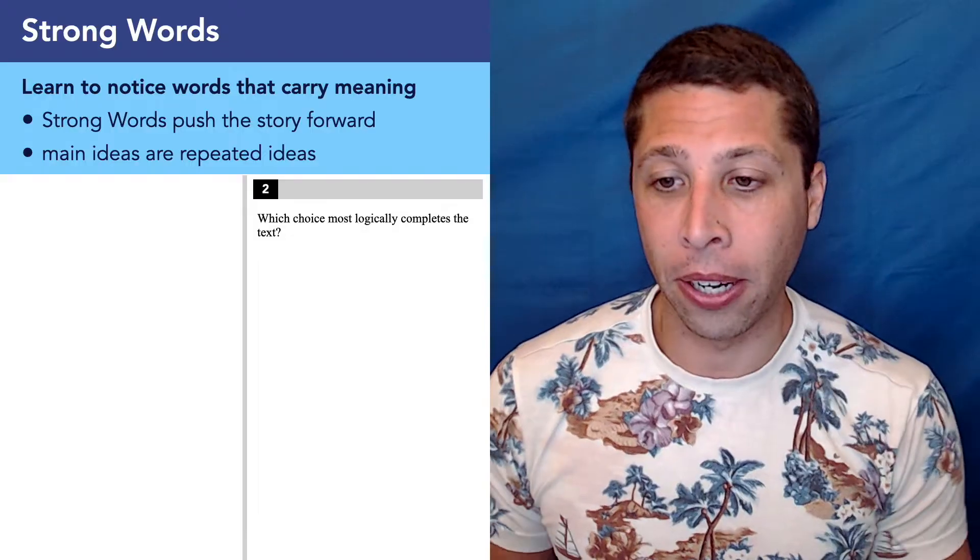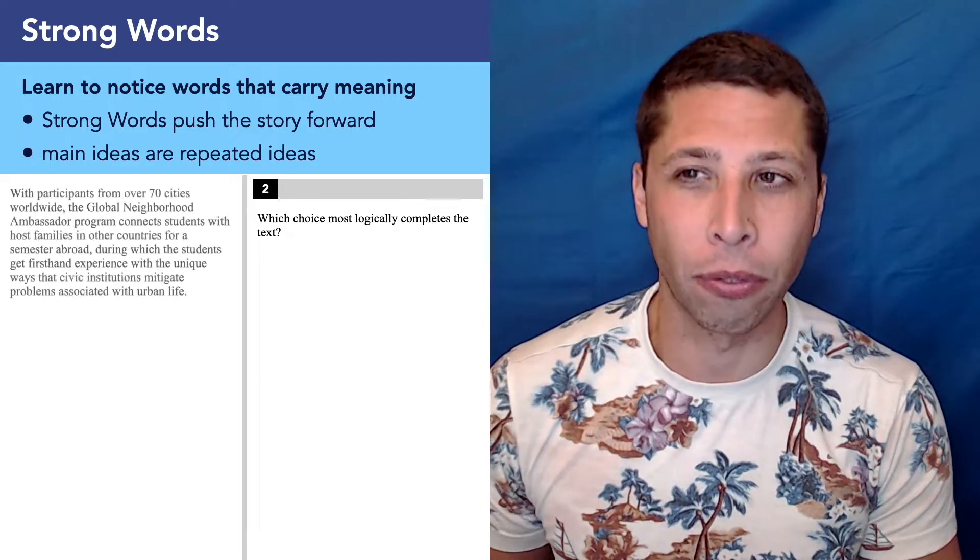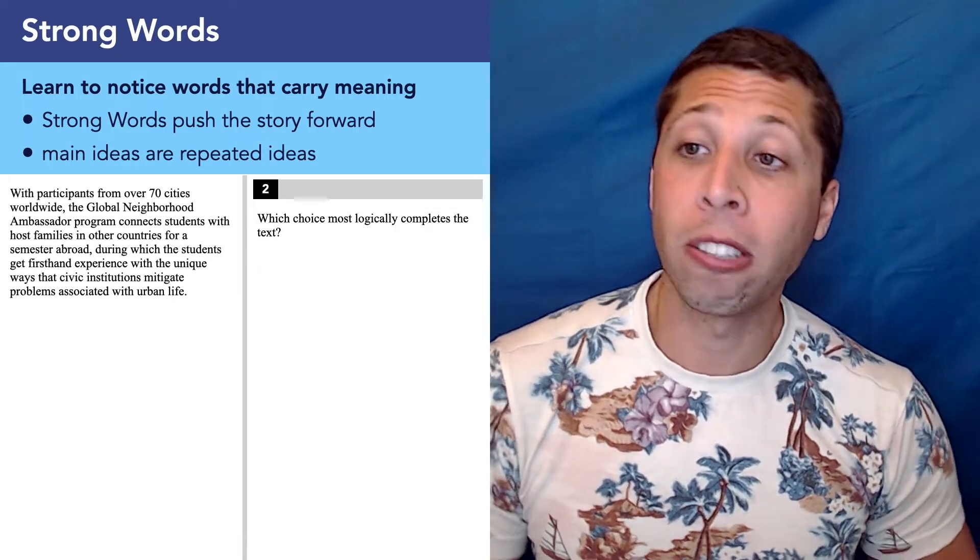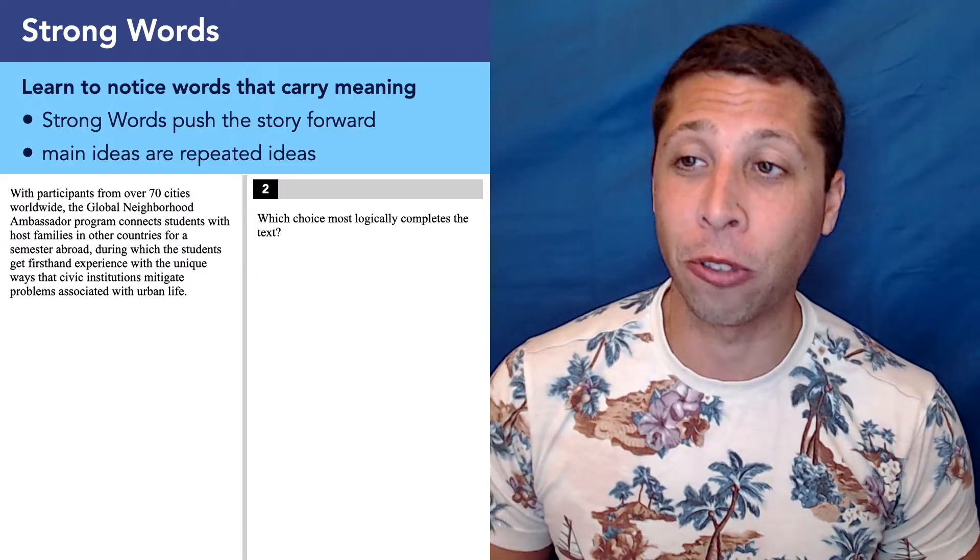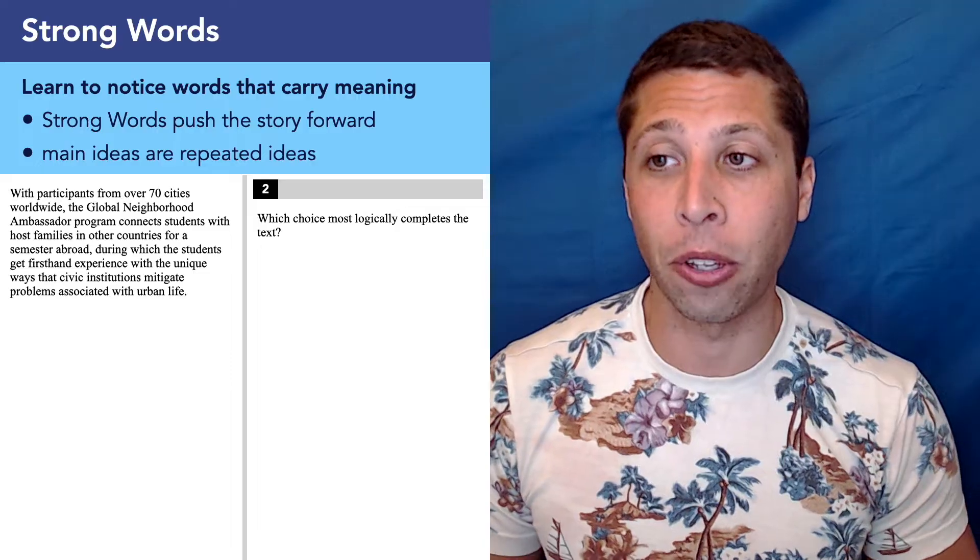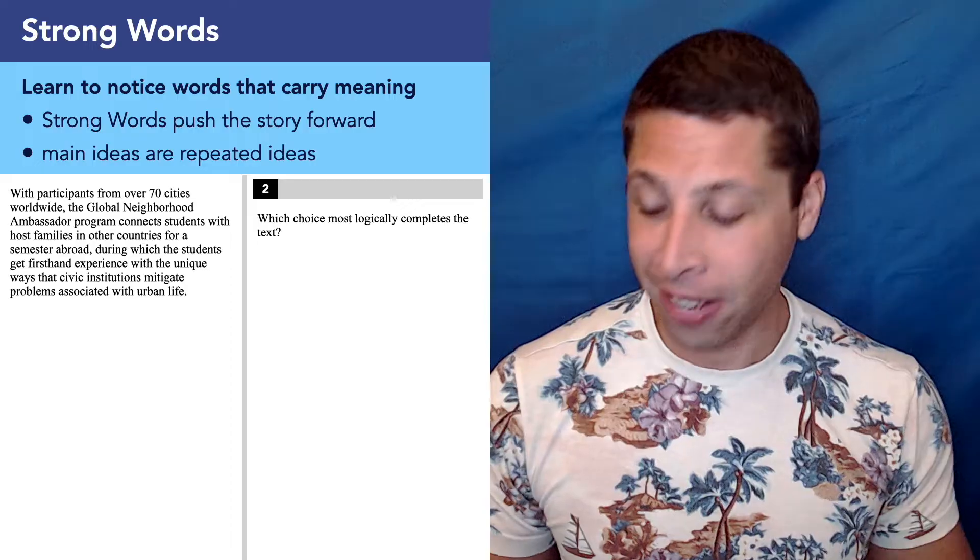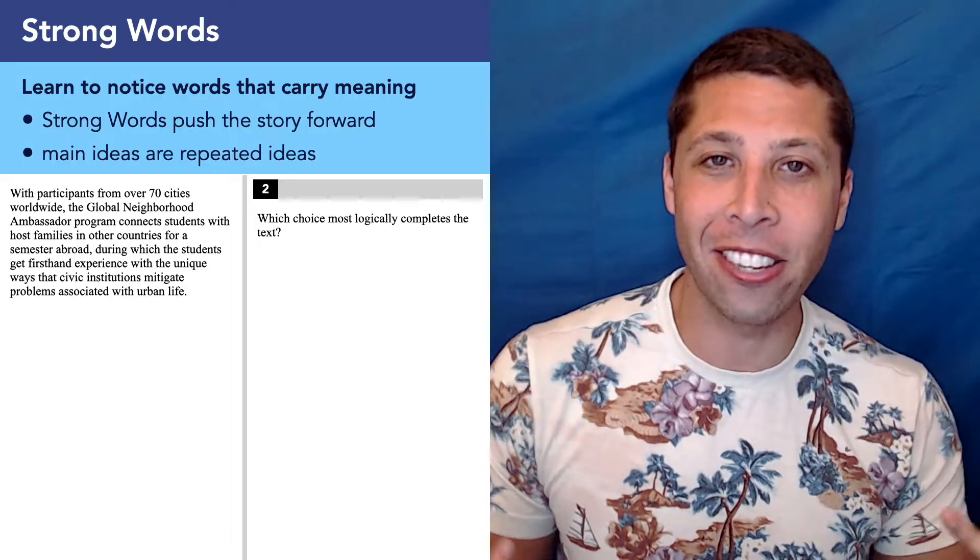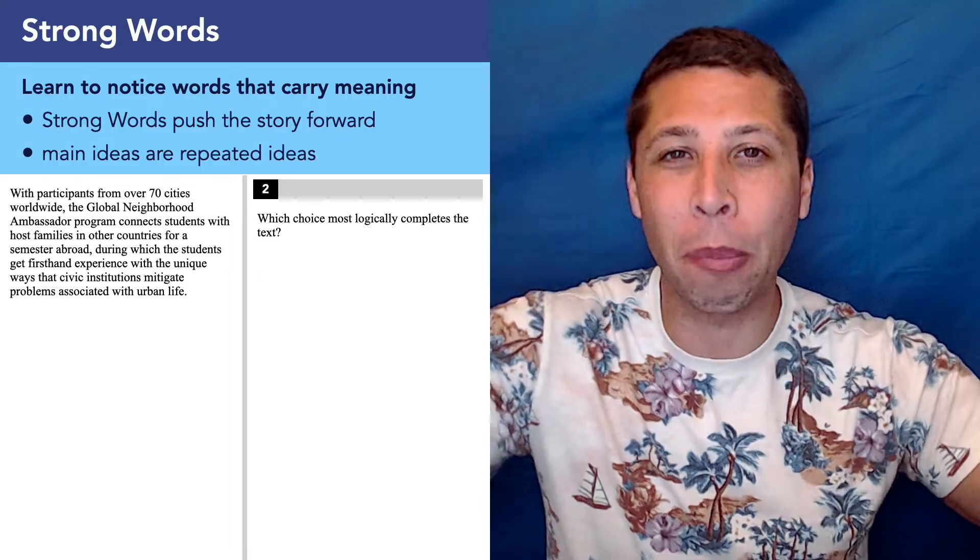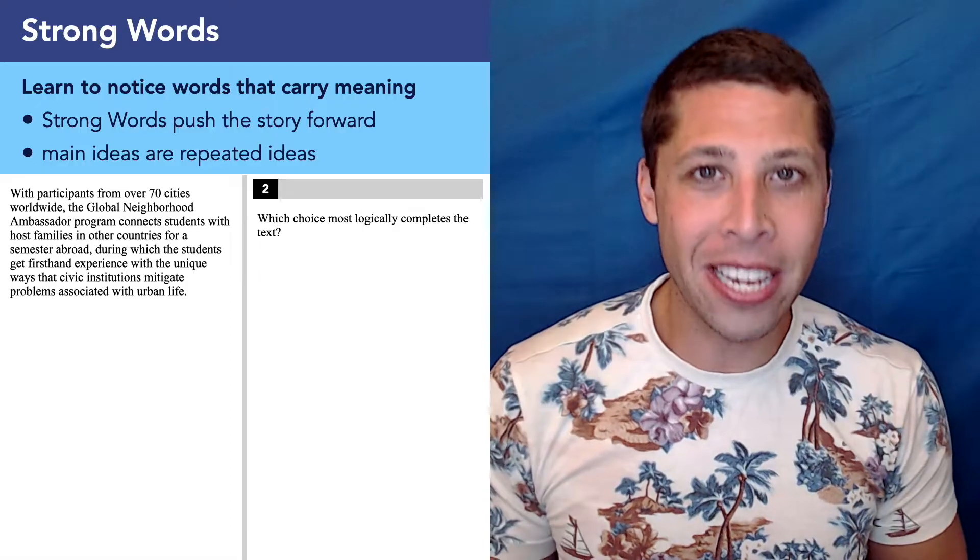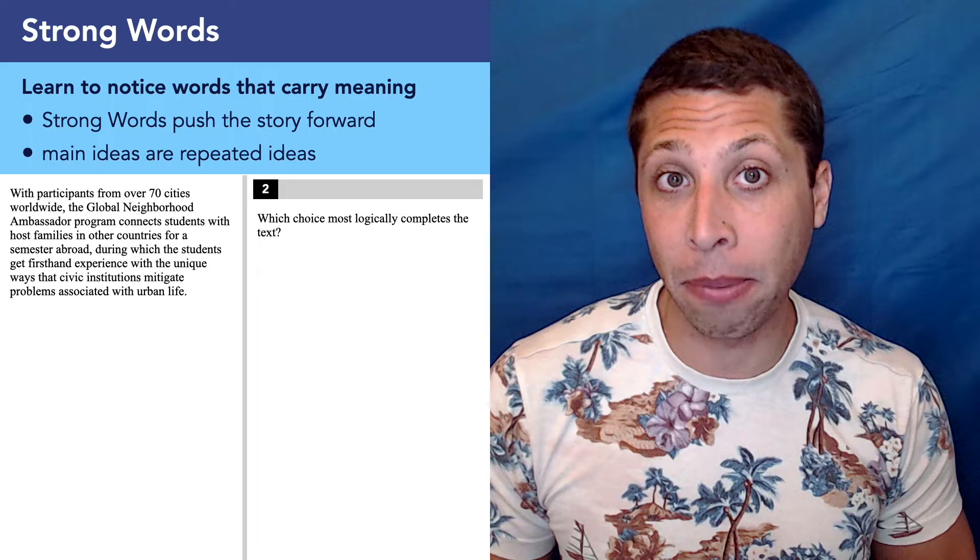Let's do one more example here. And again, we're going to kind of go slow, but we're still kind of doing the same thing. It says logically completes the text, but basically we're going to look for our main idea again. With participants from over 70 cities worldwide, the Global Neighborhood Ambassador Program connects students with host families in other countries for a semester abroad, during which the students get firsthand experience with the unique ways that civic institutions mitigate problems associated with urban life. This is all house cat stuff. It's telling me about the program. I kind of need to know that to know what we're talking about, but it's not informing my real opinion here. So for now I would not highlight anything.